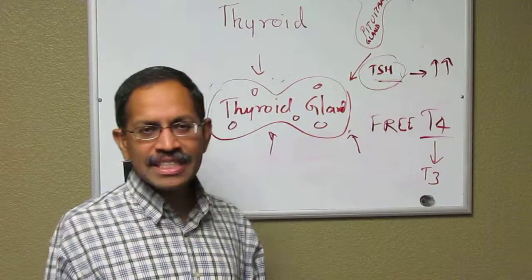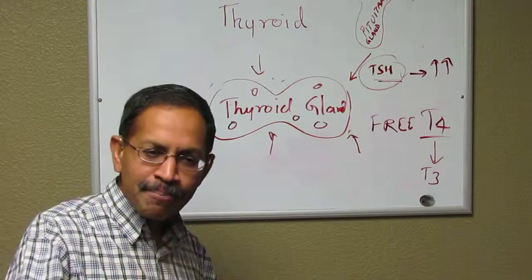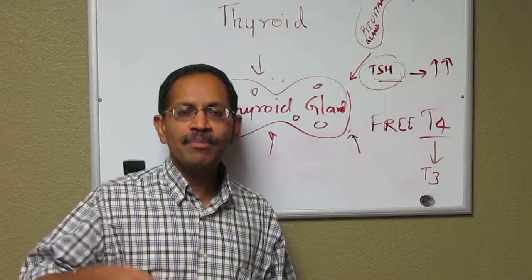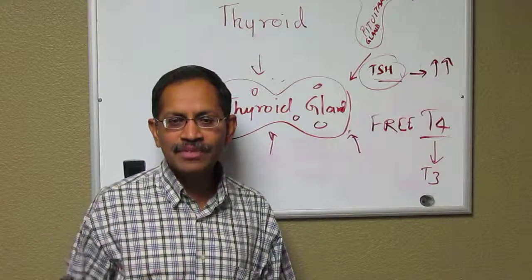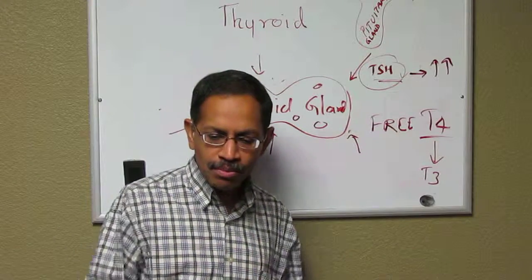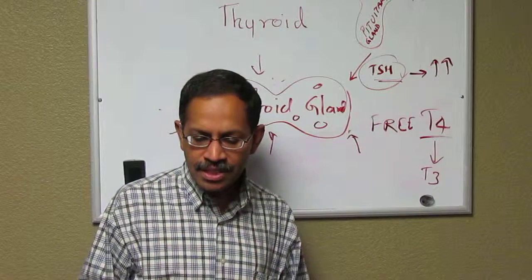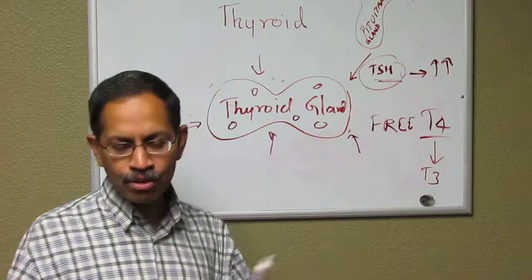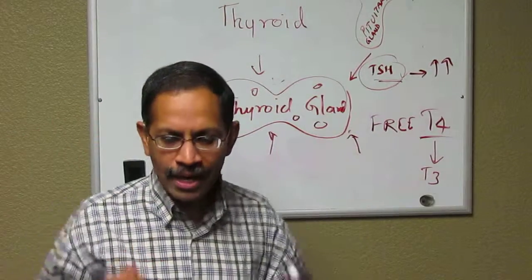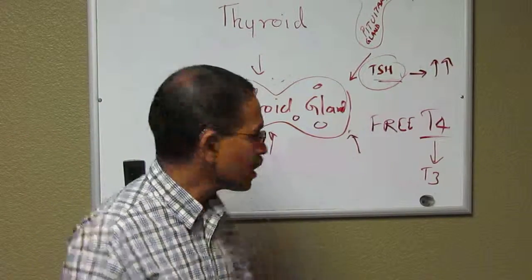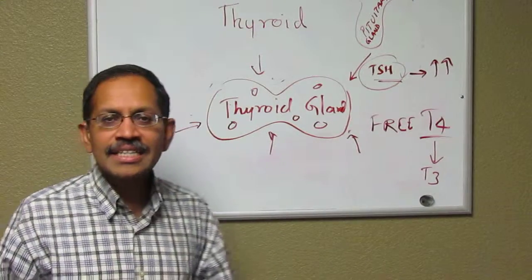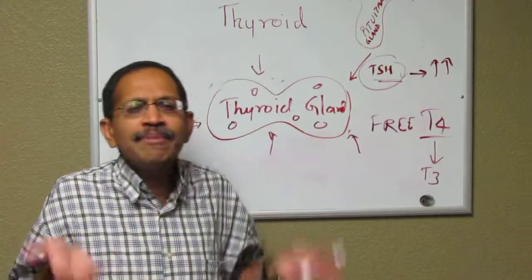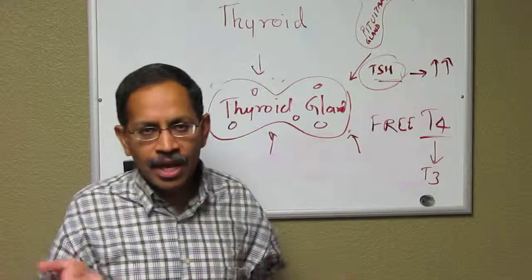The next topic of discussion will be hyperthyroidism, or the common form of hyperthyroidism, which is Graves' disease. You would have seen the other video on hypothyroidism or Hashimoto's thyroiditis, where there's a low-acting thyroid. In Graves' disease, it's a faster-acting thyroid gland, or a hyper-functioning thyroid gland.